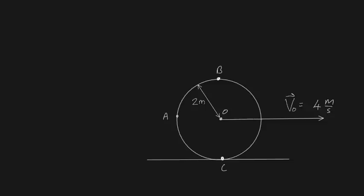Hey guys, this is going to be a fairly simple relative motion problem. Let's say we've got this wheel here, rolling across this floor to the right in such a way that the velocity of our center point O is going to be 4 meters per second to the right. My question to you is: what is the velocity of A?